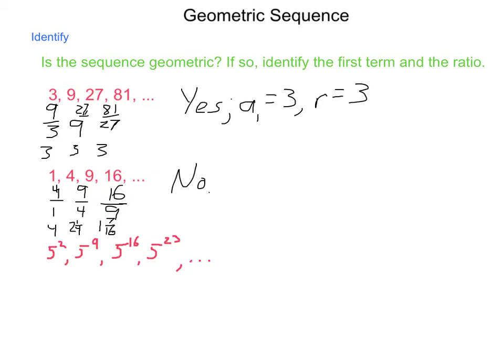Last one on this page, we have 5 squared to 5 to the ninth. Since it's given in this way, we go 5 to the ninth divided by 5 squared. Next, we take our 5 to the sixteenth and 5 to the ninth, so that's 5 to the sixteenth divided by 5 to the ninth. And then, our last two, the twenty-third and the sixteenth.